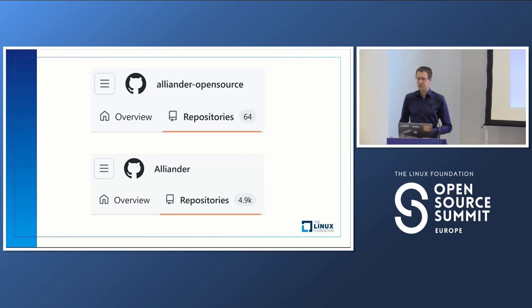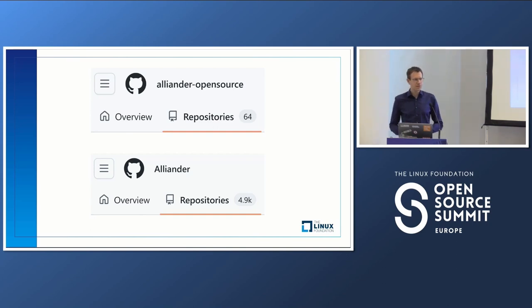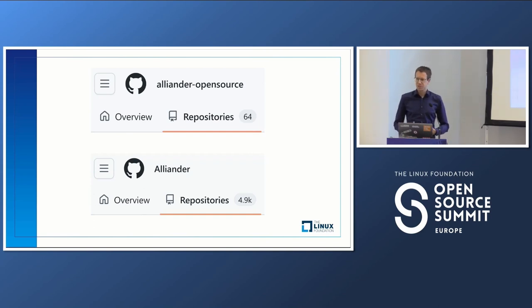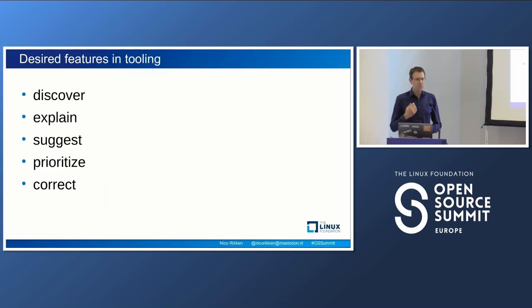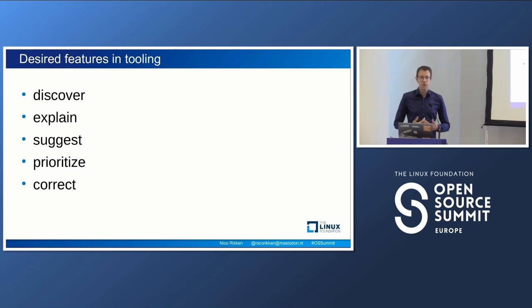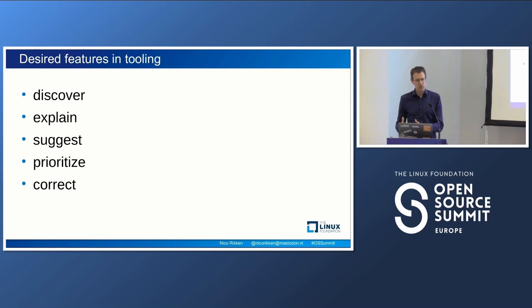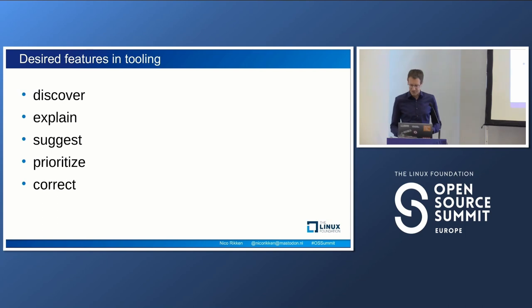I work at an open source program office, and even checking dozens of open source projects would take quite a bit of time. If I were to do that on our internal projects — without talking about thousands — this would be an immense amount of work. So I needed automation: a tool that can discover non-inclusive words, explain why it's an issue, suggest alternatives, help prioritize, and even correct automatically if possible.